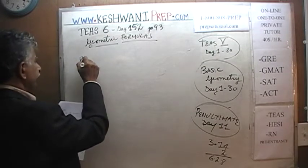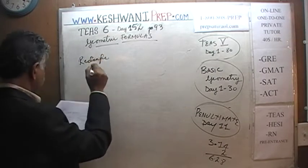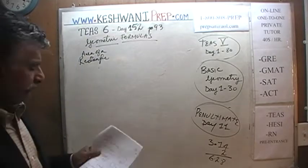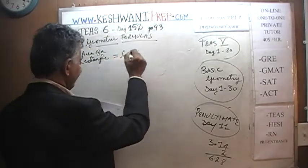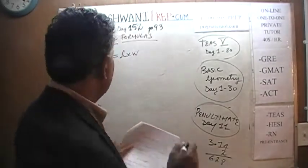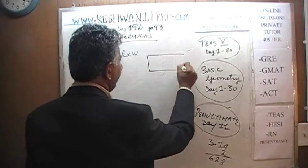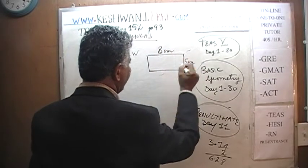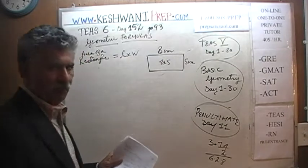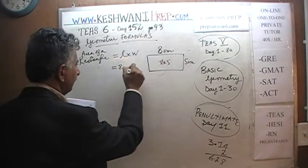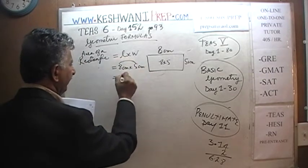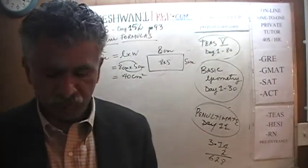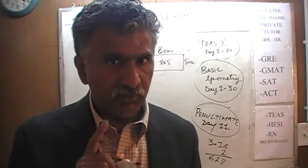Rectangle. How do we find the area of a rectangle? Area of a rectangle is very simple — everybody knows that it is length times width. For example, if we have a rectangle that is 8 cm by 5 cm, the area is 8 cm times 5 cm. 8 times 5 is 40, and cm times cm is cm². So the area is 40 cm².